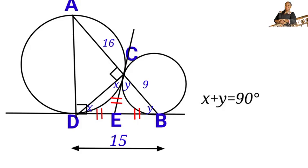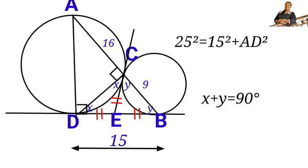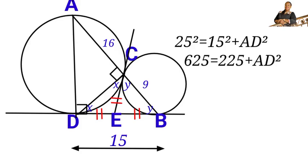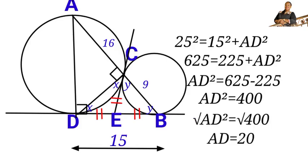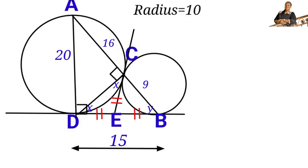Applying Pythagoras theorem to right triangle ADB: AB is 25, BD is 15, and AD is unknown. So 25² = 15² + AD², giving 625 = 225 + AD². Therefore AD² = 400, and AD = 20. The diameter of the bigger circle is 20 units, so the radius is half of 20, which is 10 units.